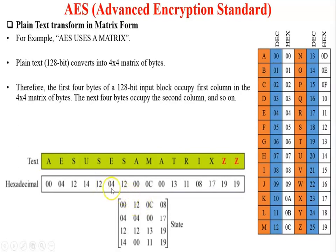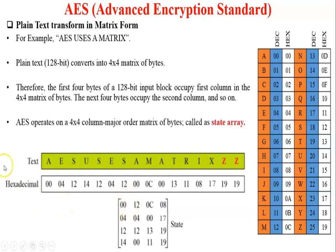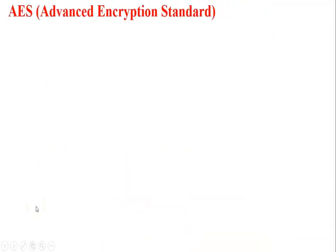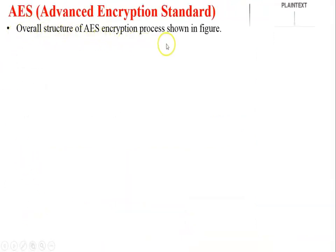The plaintext size is 128 bits, converted into a 4x4 matrix of bytes. For a 4x4 matrix we need 16 characters, so we have 16 hex values. The first 4 bytes of the 128-bit input block occupy the first column, the next 4 bytes occupy the second column, and so on — this is a column-wise matrix. Each hex pair such as 00 represents 1 byte (8 bits), and 16 bytes × 8 = 128 bits.